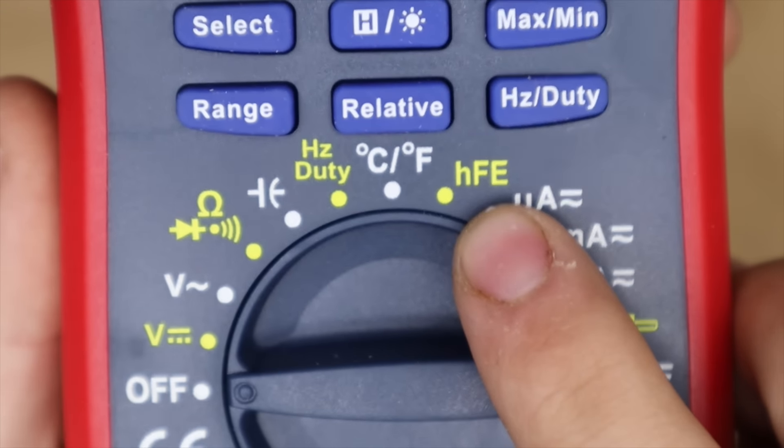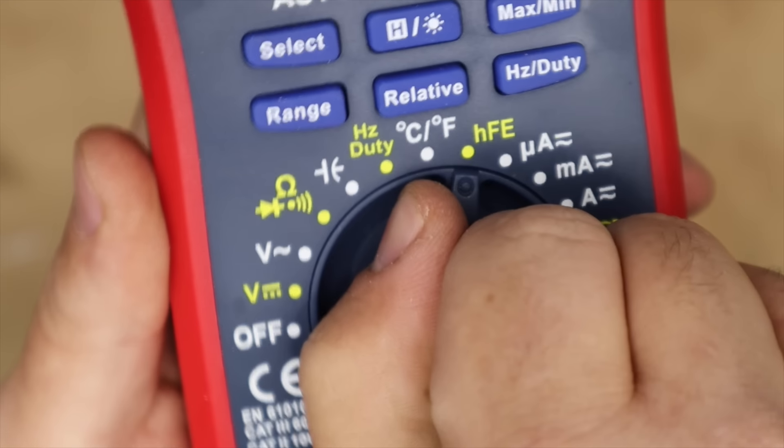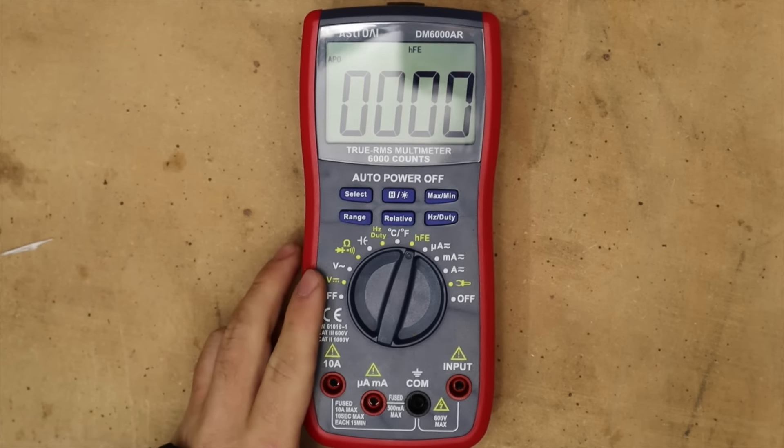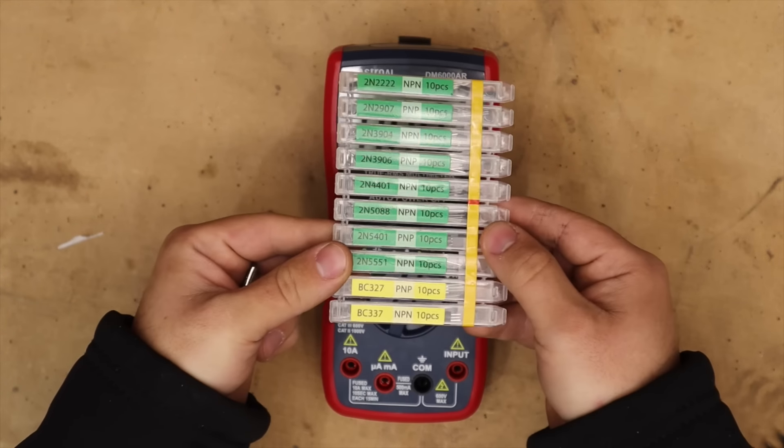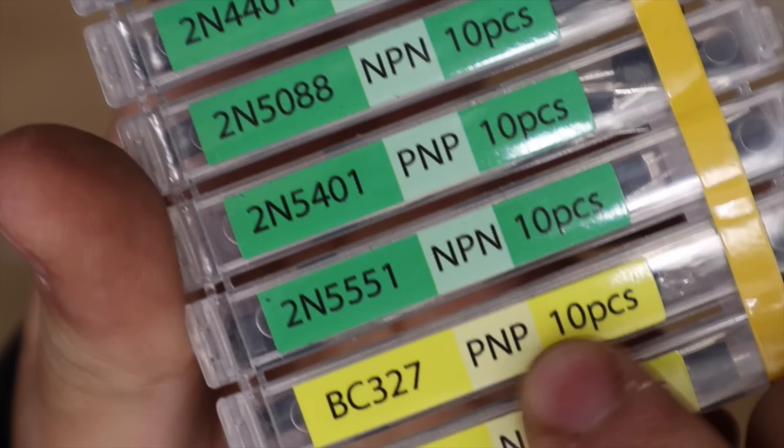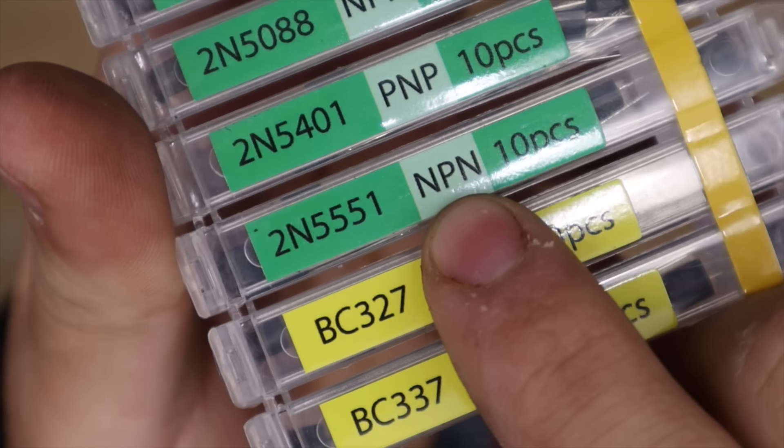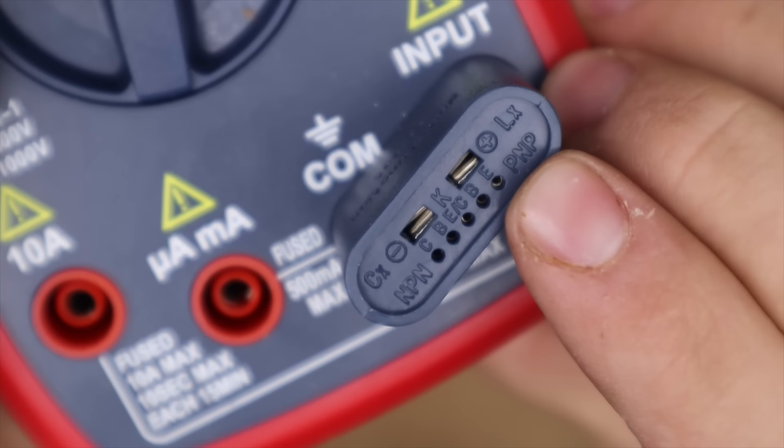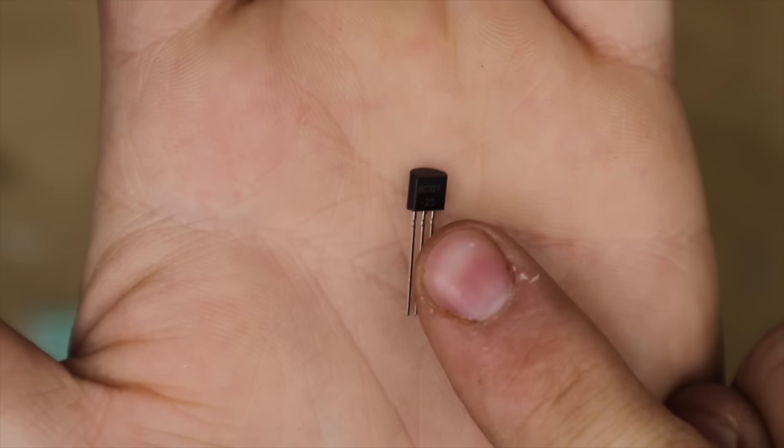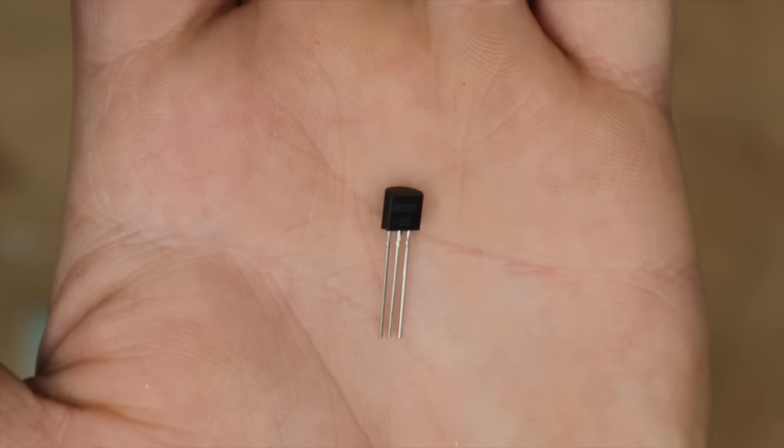Another less common feature is HFE. This stands for hybrid parameter forward current gain common emitter. It essentially measures transistors and in this case we have to use an adapter and place it on our input. We then get our diode and have to figure out whether it's PNP or NPN. If we don't know what kind it is we look at the number and look for the data sheet on this transistor and it'll tell us which is the emitter base and collector.